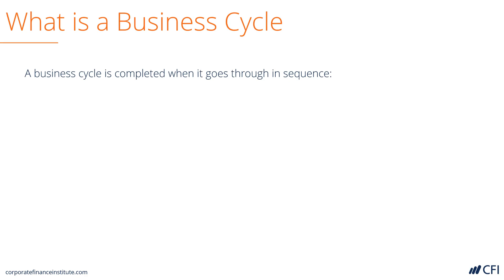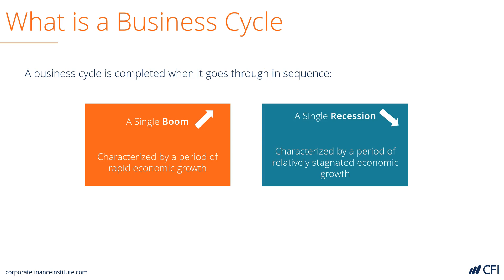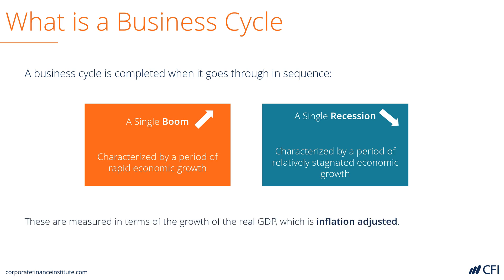It consists of sequences, so it could have a boom, which is characterized as a period of economic growth or rising gross domestic product. It could also be measured as a recession, which is a period of shrinking economic activity. At the end of the day, stages of the business cycle are measured in terms of GDP.